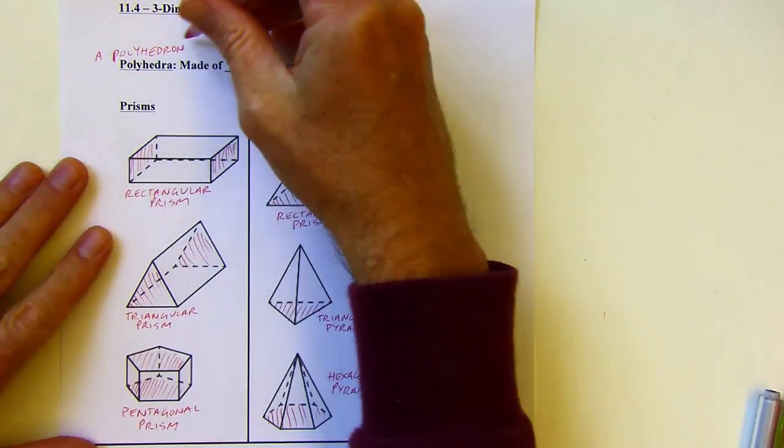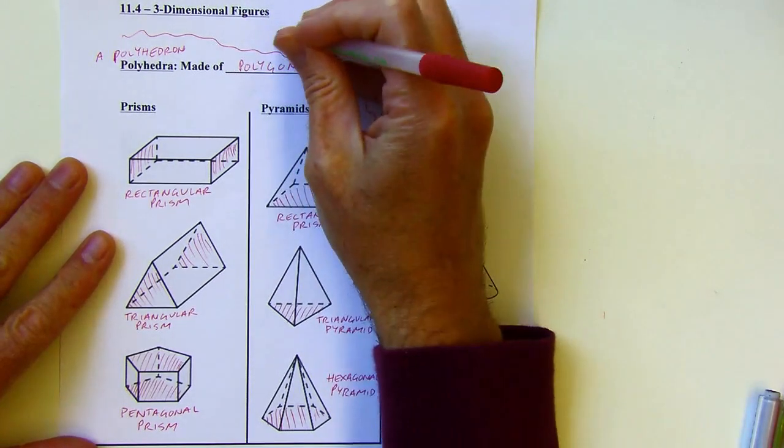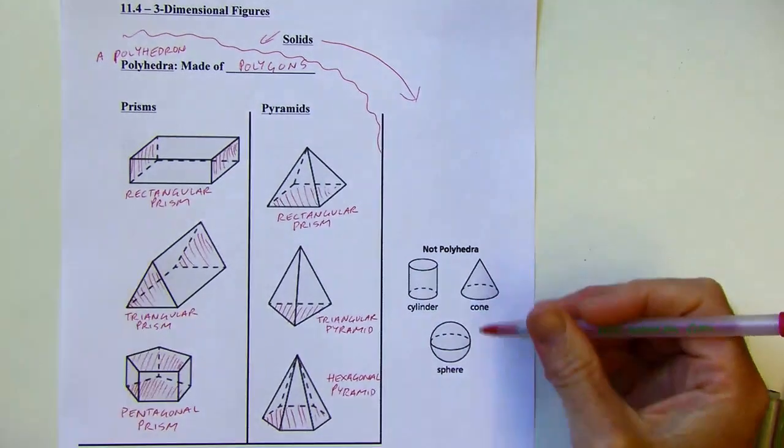So when I say polyhedra up here, these ones are polyhedra. And these are also solids. So are those, but these are not polyhedra.